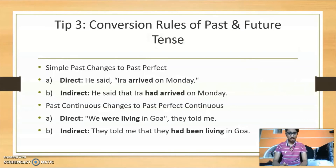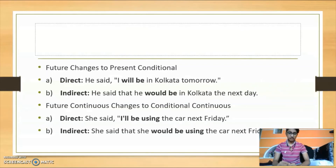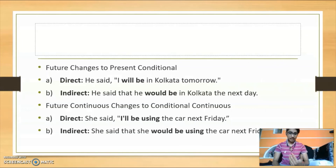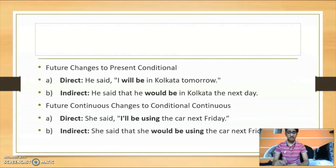Next, future changes to present conditional. For example, in direct speech: 'He said, I will be in Kolkata tomorrow' becomes 'He said that he would be in Kolkata the next day.' Then future continuous changes to conditional continuous. For example, 'She said, I'll be using the car next Friday' becomes 'She said that she would be using the car next Friday.'